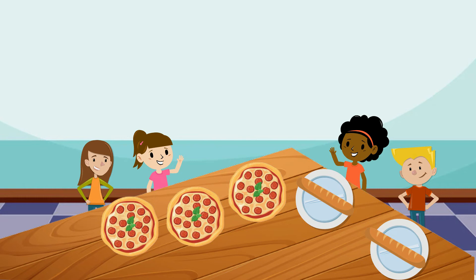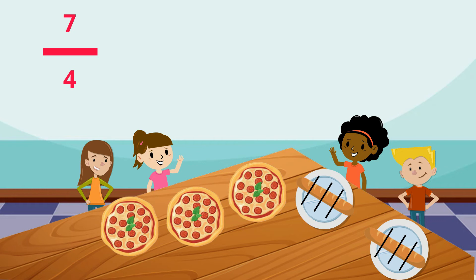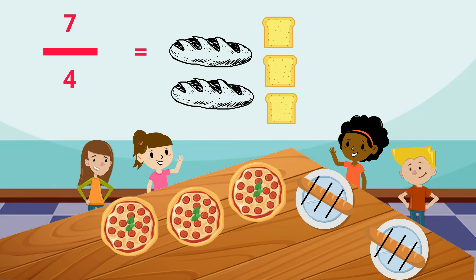These improper fractions can also be seen from a number line. For example, above we can see 2 breadsticks over the number line cut into quarters. Lisa and her friends had taken 7 pieces of the breadsticks. As we can see, 7 quarters is the fraction of breadsticks that were taken, which means that one whole of a breadstick was eaten, which is 4 pieces, and 3 extra parts of another breadstick was eaten. Therefore, the improper fraction of breadsticks eaten is 7 quarters.